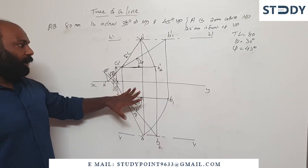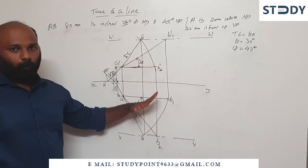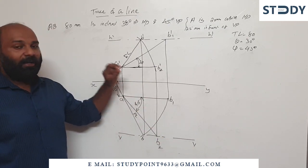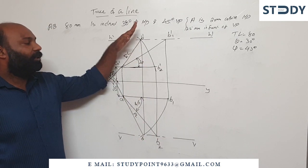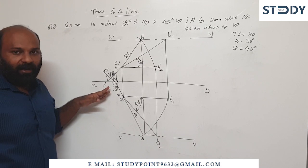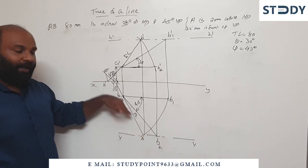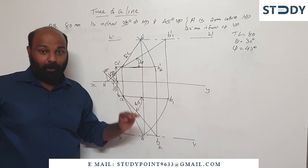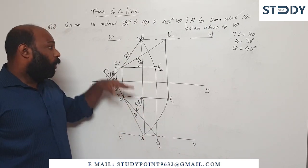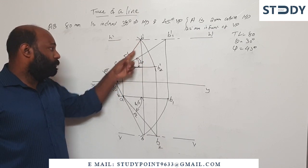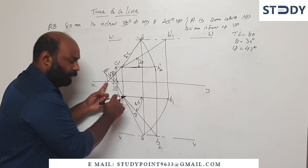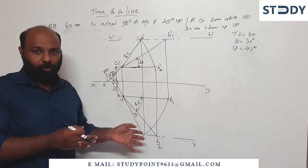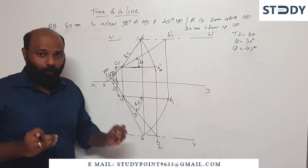Now this is the point of AB. We have the parallel method — the final rotation method. In this method we have the trace HT and VT procedure. First, extend the front view to the XY line and name the point H. Then extend the top view to the XY line and name the point V. H and V are perpendicular to the XY line. The perpendicular opposite view A'B' extended gives H — that is the Horizontal Trace. A-B top view extended gives V — that is the Vertical Trace. Thank you.